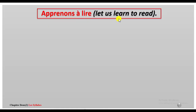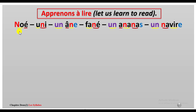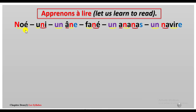Apprenons à lire — let us read. Répétez après moi: Noué, uni, un an, un nan. So you do liaison — you combine the last consonant and the first vowel of the next word. That is liaison.